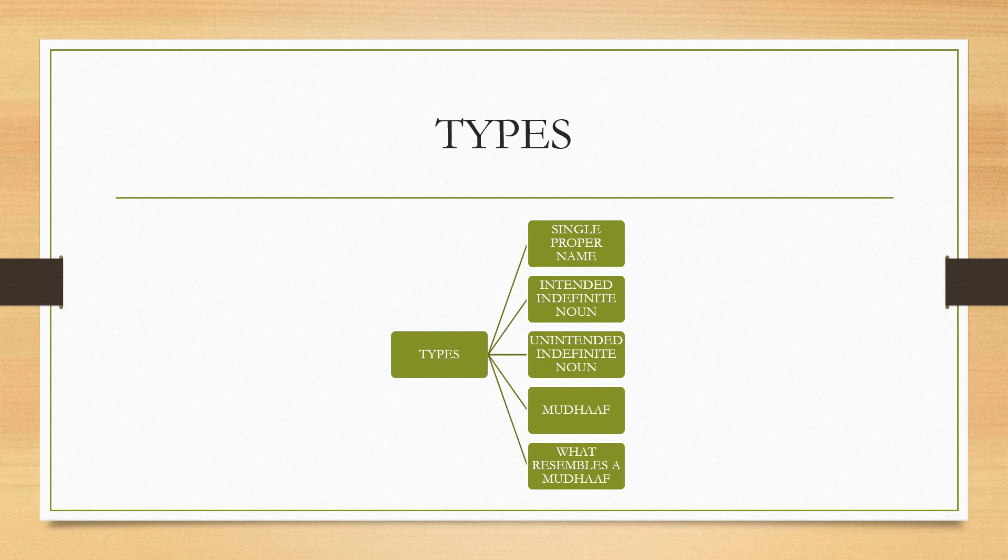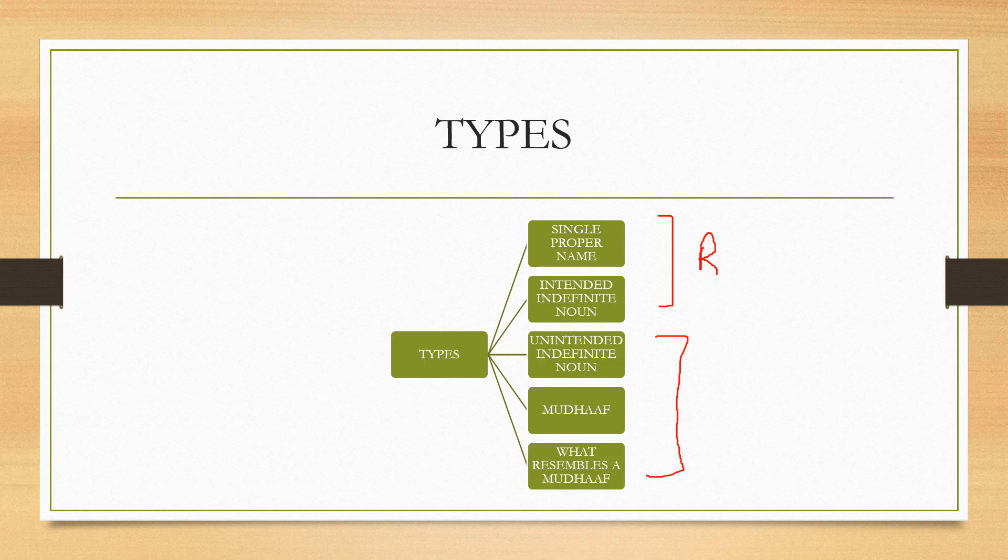And these two types - the single proper name, mufrad alam, and nakirah al-maqsoodah - will always be marfu. As for the remaining three types that you see, they will always be mansoob. So I'll write ar-raf'a with an R, and these three will always be mansoob, so I put an N to show nasb.